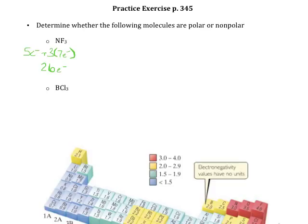When we draw these, we're going to assume that the first atom is the central atom unless we're told otherwise, so we're going to draw the nitrogen. We're going to do three bonds to fluorine.